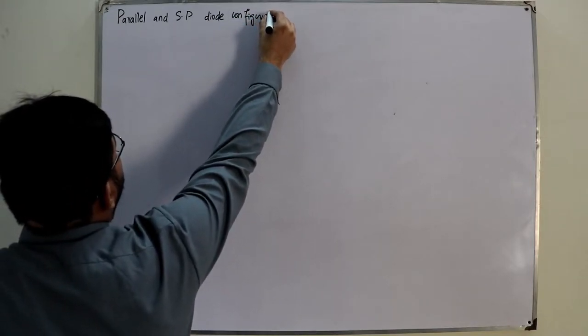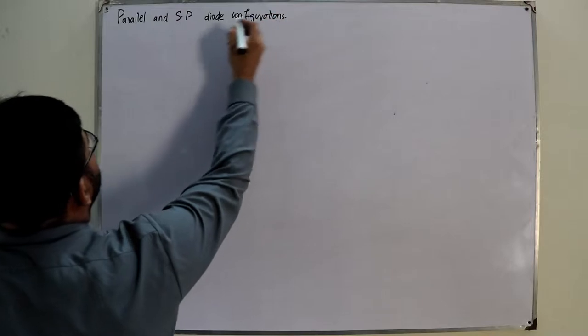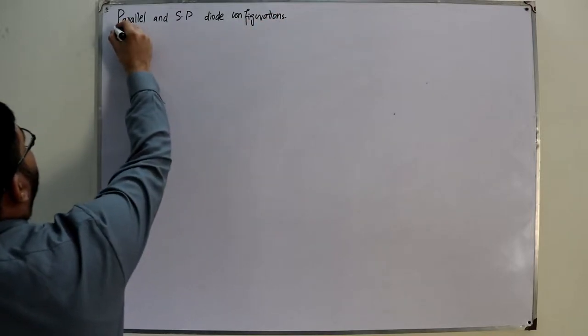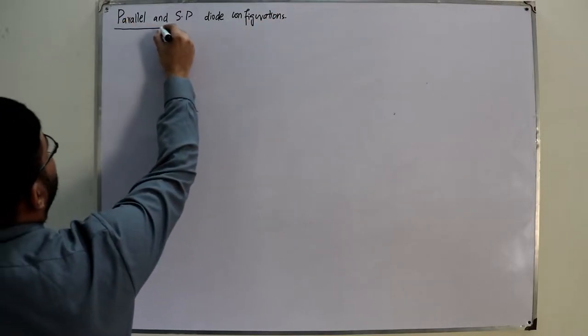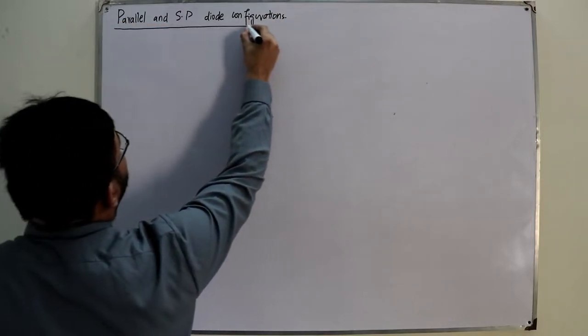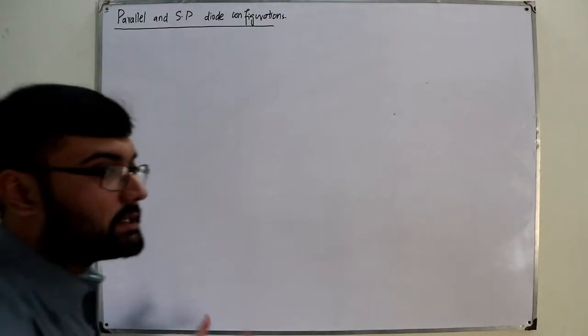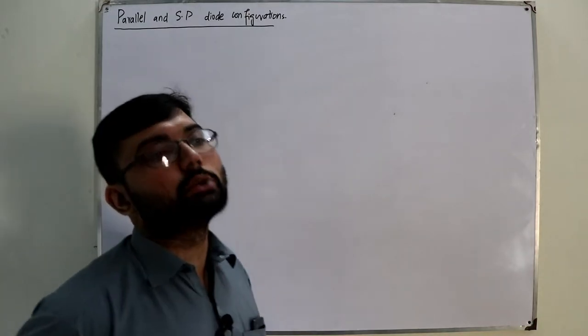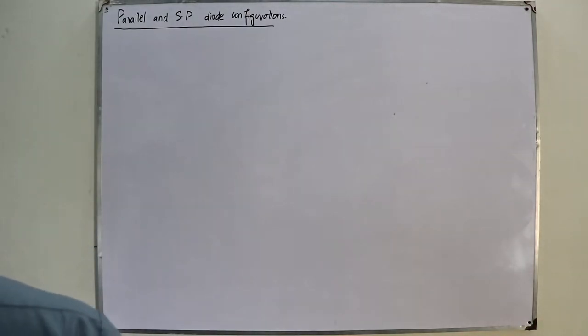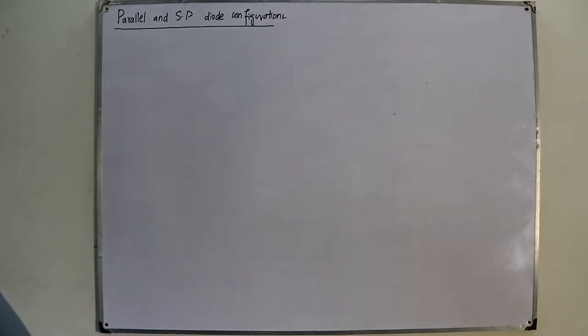These are basically circuit analysis problems but with a diode involved. We are practicing some network theory. So let's start with example 2.10.